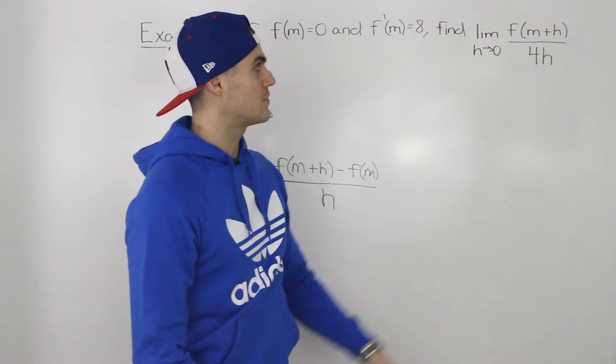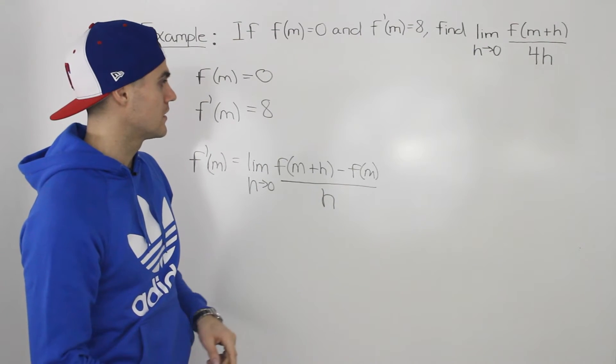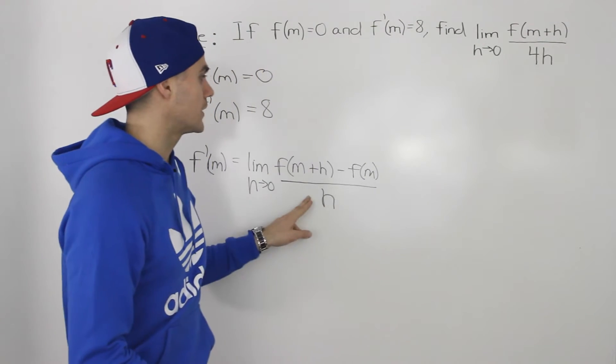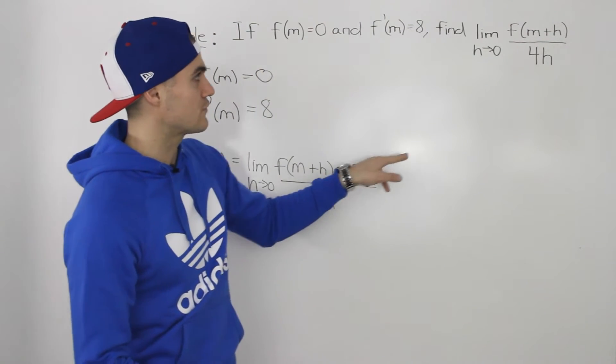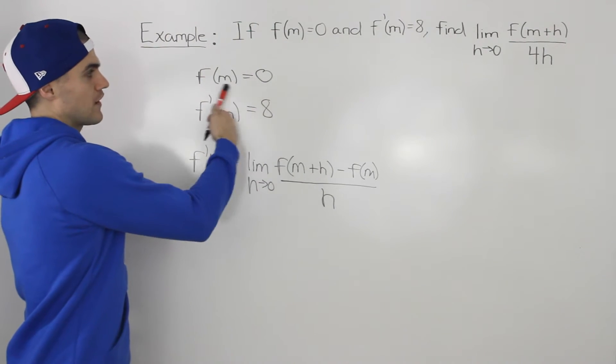We have this f of m plus h in the numerator, as we do here. We have an h in the denominator. But the problem is, over here we have a 4 in the denominator, and over here we have this f of m in the numerator, and over there we don't. But we know that f of m is equal to 0.